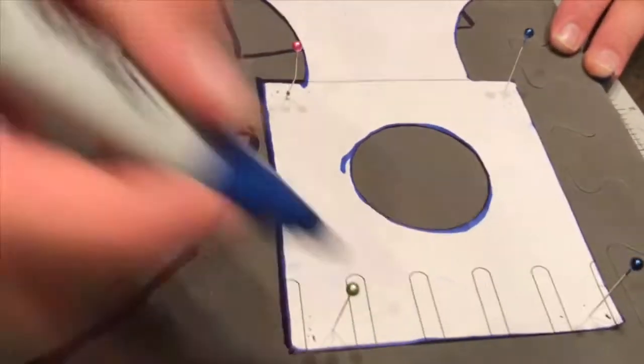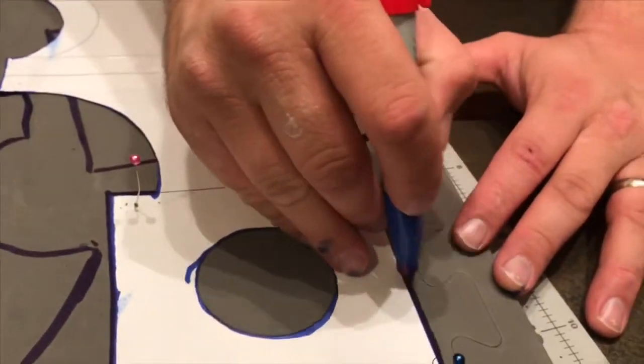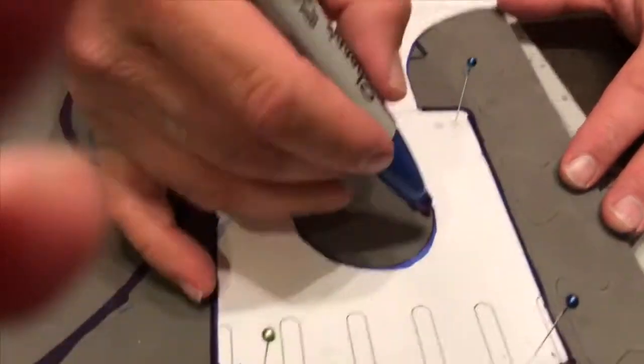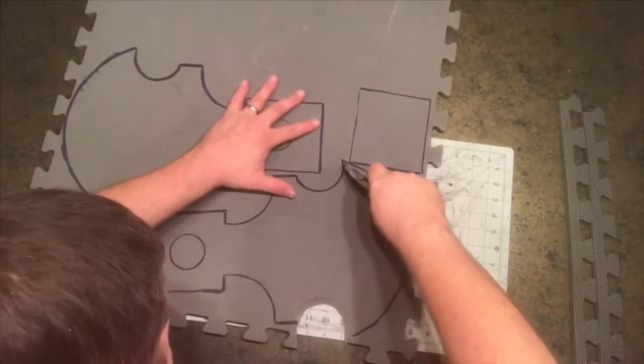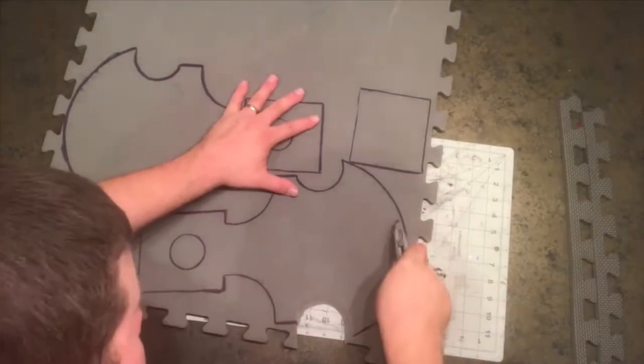And my five-year-old recorded this part, so his fingers are everywhere. But anyway, so you want to mark out your template on your foam. You should be able to do this entire axe on one sheet of 24 by 24 inch foam.